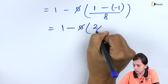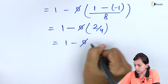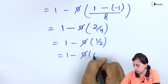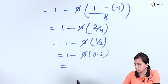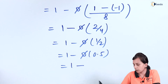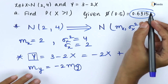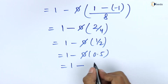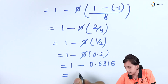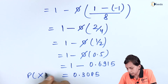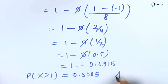Now, this gives us the value 2 over 4, so 1 minus 1 over 2. The probability of X greater than 1 equals 1 minus φ(0.5), and φ(0.5) is already given as 0.6915. Therefore, the answer is 1 minus 0.6915, which equals 0.3085. So the probability of X greater than 1 for Gaussian random variable Y is 0.3085.